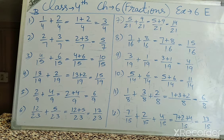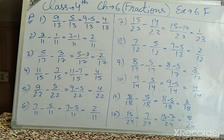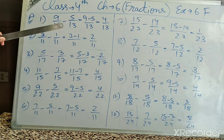Now let's do exercise 6F. This exercise is just like 6E but here we have subtraction. The denominators are still the same in all questions. There is an a-part and a b-part — b-part you will do in the book. It is also very easy. First question of 6F a-part: 9 upon 13 minus 5 upon 13.